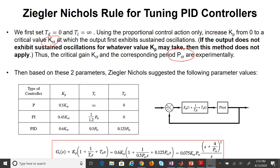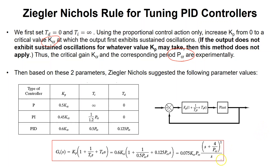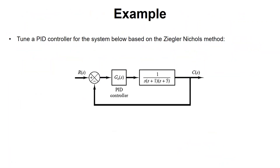The final form of the PID controller in terms of the two critical values is: 0.075·KCR·PCR·s + 4/PCR², all divided by s. The numerator is quadratic and the denominator has one pole at zero.